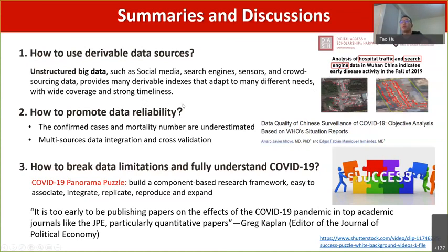This is also the second question I want to propose — how to promote data reliability. Maybe we can use multiple data sources to do cross-validation. Right now, the confirmed cases and mortality numbers are actually estimated. There was one research published on JAMA that estimated the official counts of COVID-19 in the United States underestimate death cases by as much as 28%. So there is no 100% reliable data set; we have to integrate and merge different data sets and perform validations.